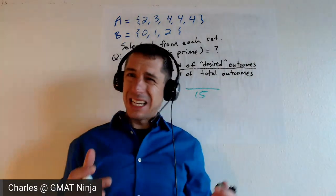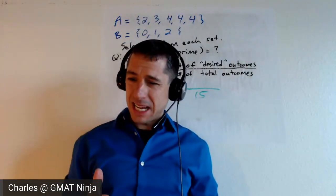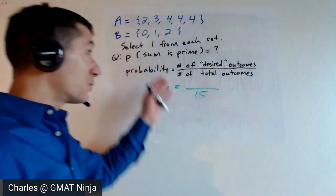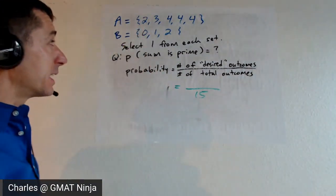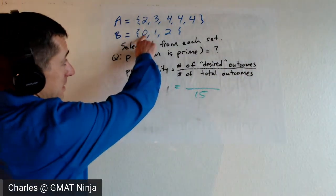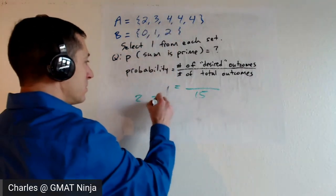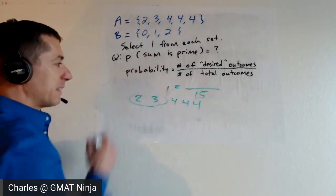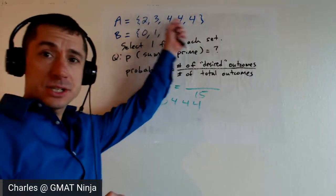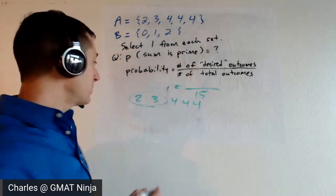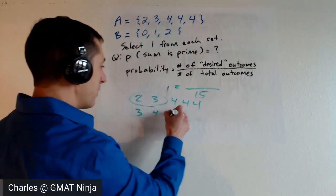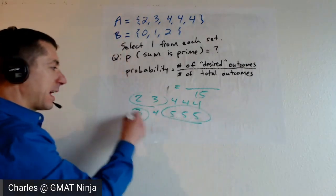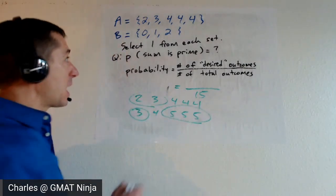All we need to do is get the numerator. There are a bunch of different shortcuts you can take here, but I'm going to do this in a fairly straightforward way and just count these up because it's really not that hard. So if you're adding zero to the elements in A, we've got two, three, four, four, and four — how many primes do we have? Just those two. Let's add one to each of those items in A, and we get three, four, five, five, five — so we've got three more there. One more there — we're up to six primes.